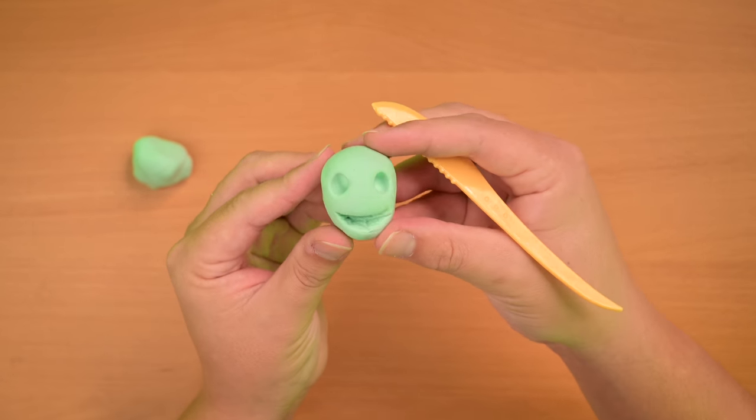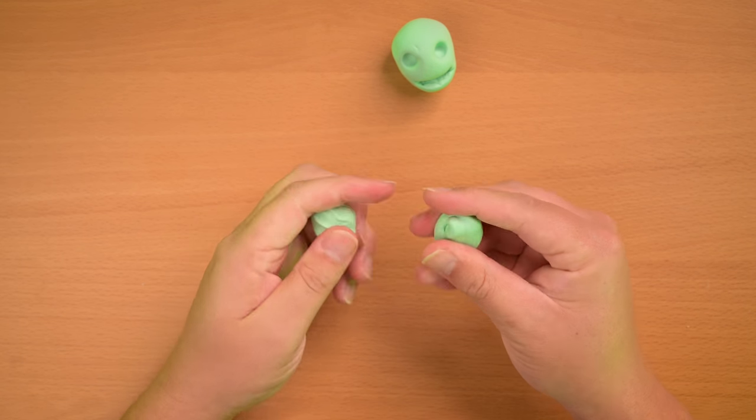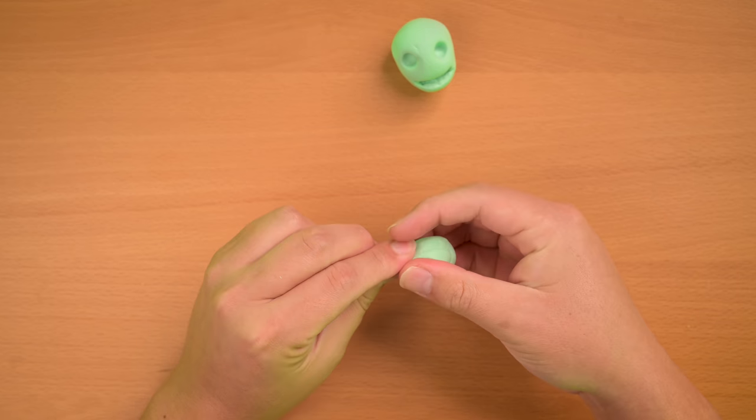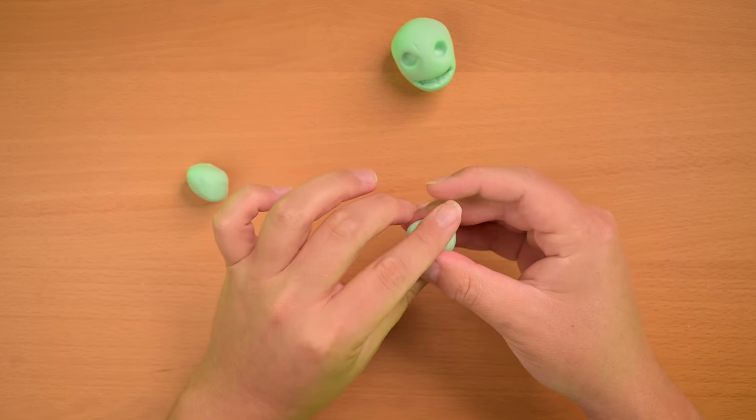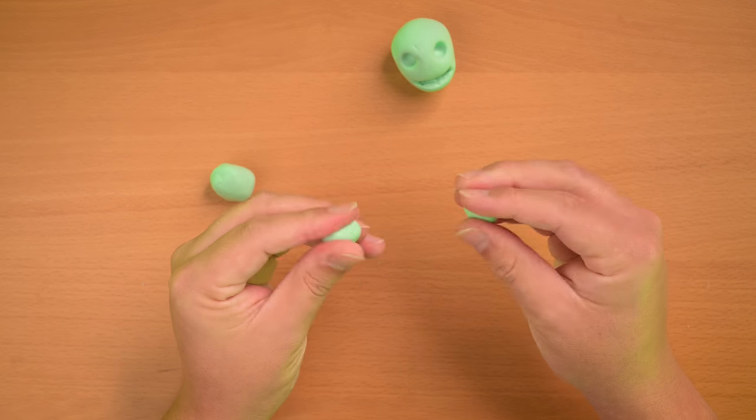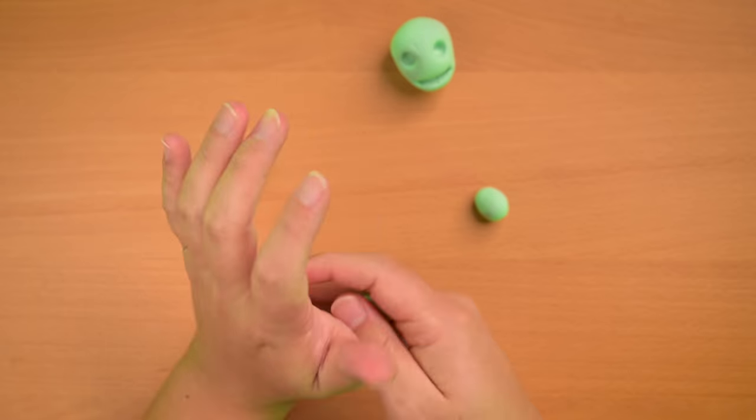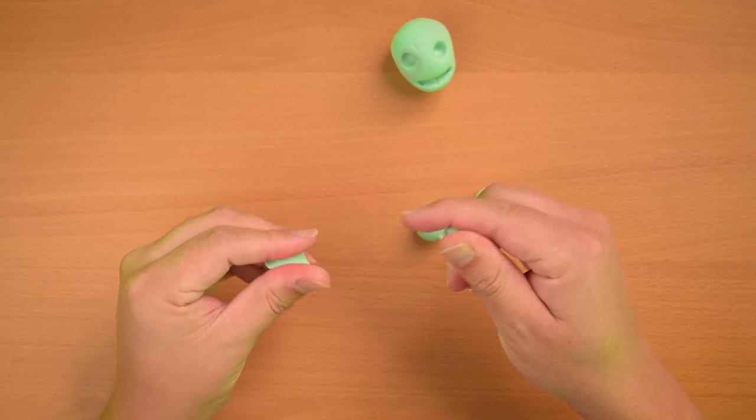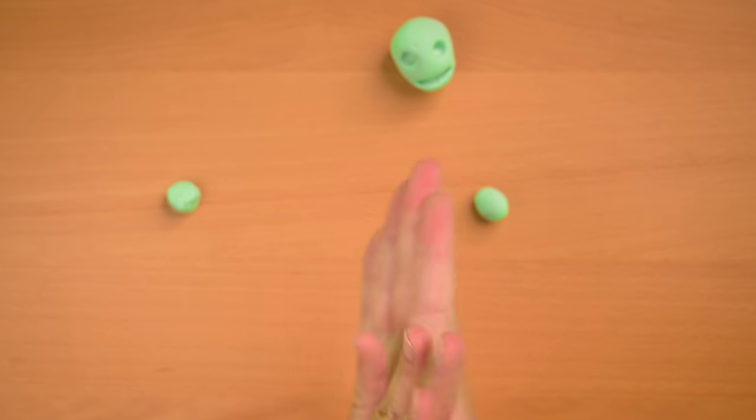And with the rest of the color that we have, we're gonna make his hands. So you're gonna want to divide what's left into two balls and then split those into more balls. So eventually you're gonna have the same amount just to keep the fingers and hands even.